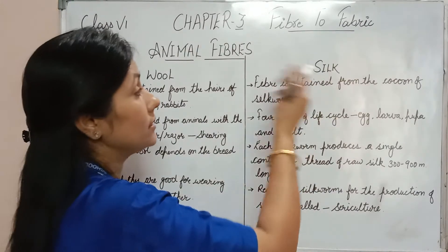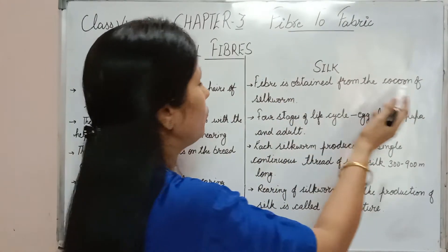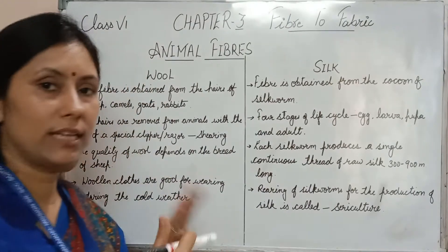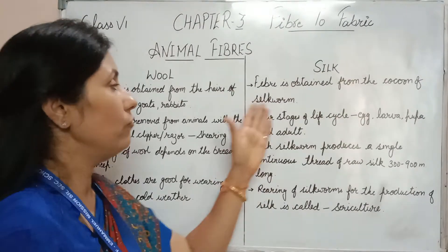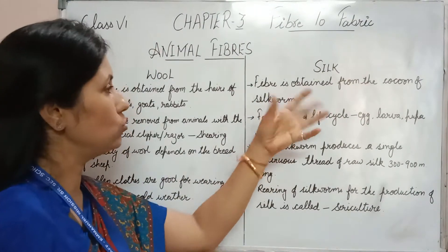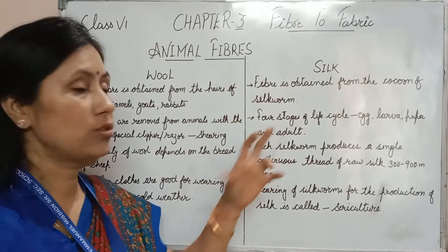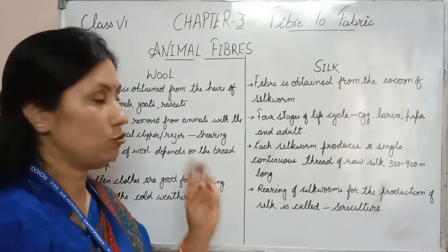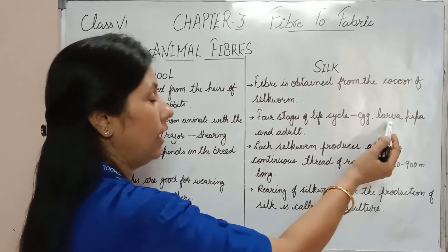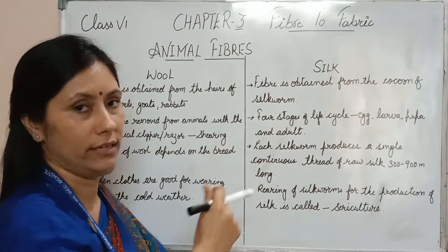The second animal fiber is silk. Silk fiber is obtained from the cocoon of the silkworm. We use silkworms and their cocoons to get silk. The silkworm's life cycle has four stages: egg, larva, pupa, and adult.